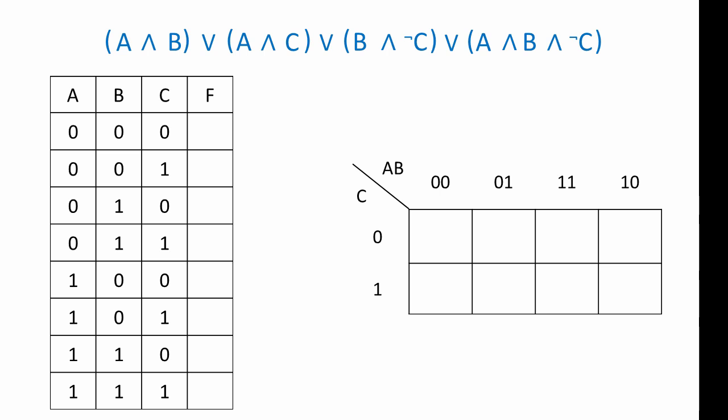Let's look at another example, but this time we're going to use a truth table — you might find this is an easier approach. I'm going to start with the first part of the expression again. I'm looking for rows in the truth table where A is one and B is one. There are two such rows, so these two rows represent A AND B, and I can populate the output column. Next, I'm looking for rows where A is one and C is one — again, there are two such rows representing A AND C, and I can populate the output column for these rows.